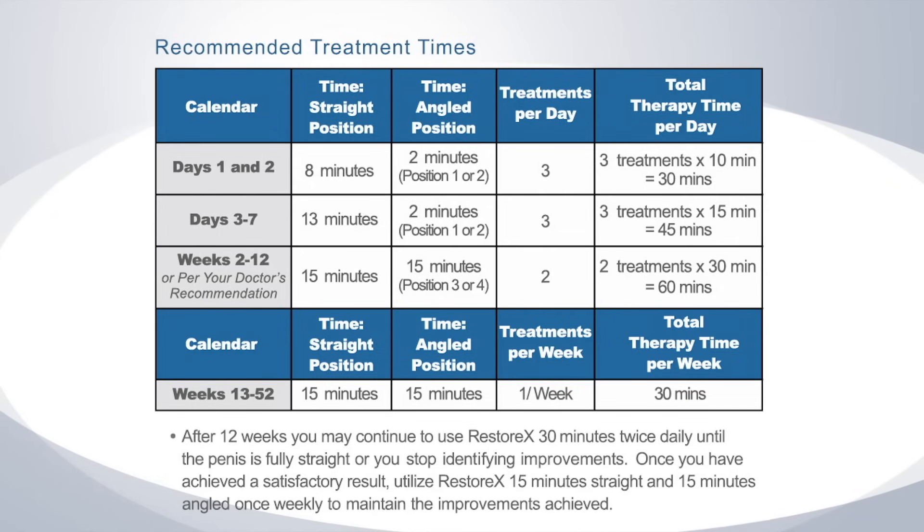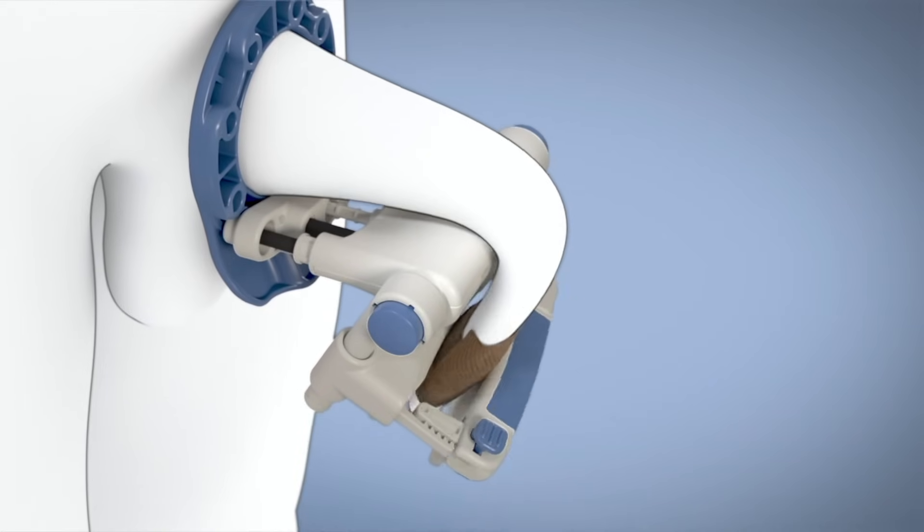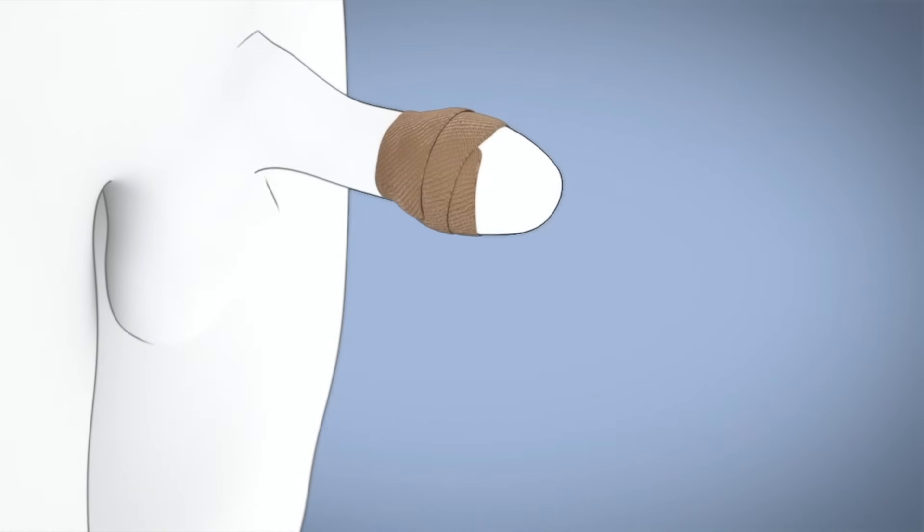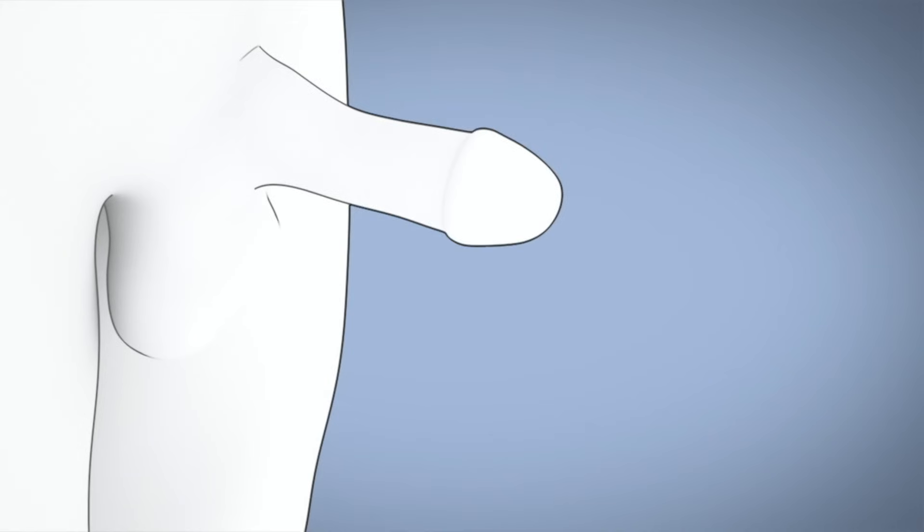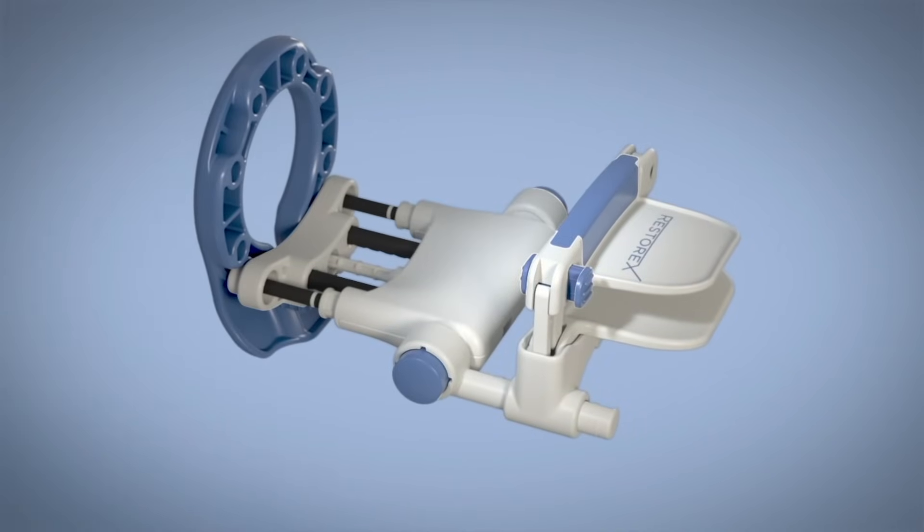The following chart contains the recommended treatment times for Restorex. Start slowly during the first week of use, working your way up to two 30-minute treatments per day. At the end of the treatment time, simply open the clamp, remove Restorex, and remove the self-adherent wrap if used. Remember to always store with the springs un-tensioned.